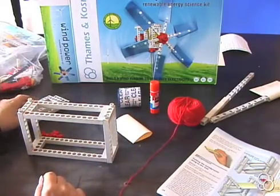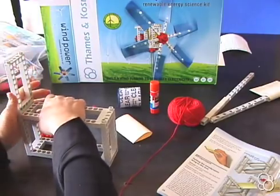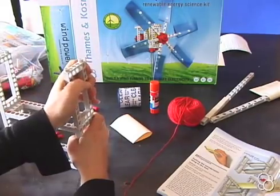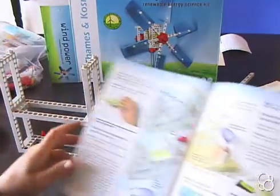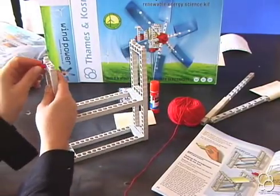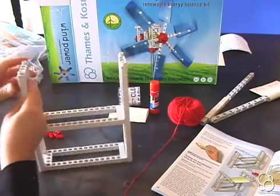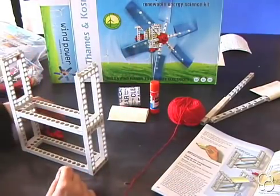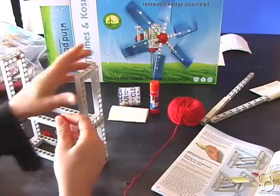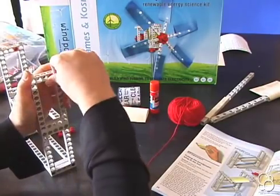And then we're going to add the two last short frames on the top right here. And we're going to put one anchor pin in the second hole from the end right here like this. And we're going to put another one on the other side in the same place. So leaving the corner hole empty, put it right here.